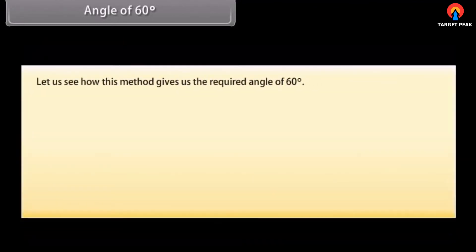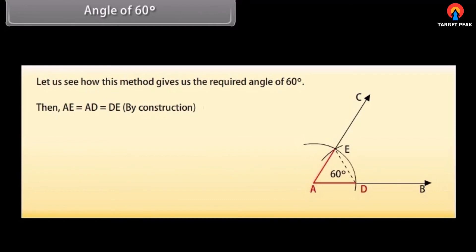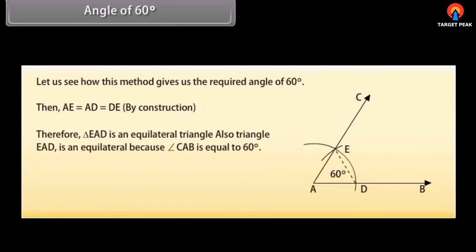To verify: join DE. By construction, AE equals AD equals DE. Therefore triangle EAD is equilateral, and angle CAB equals 60 degrees.